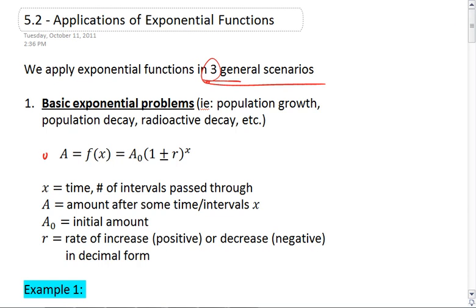The form of this equation is A equals f of x, which equals A sub 0, 1 plus or minus r to the x. Where x is the time or the number of intervals that we've passed through. A is amount after some time, so x is always our input and A is our output.